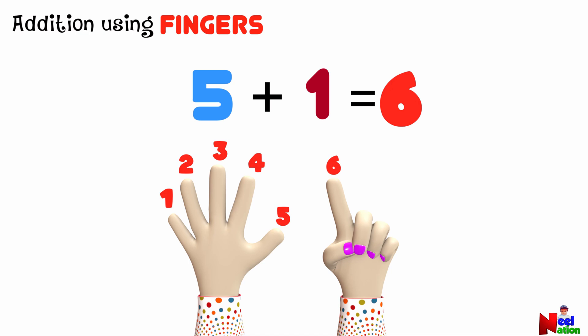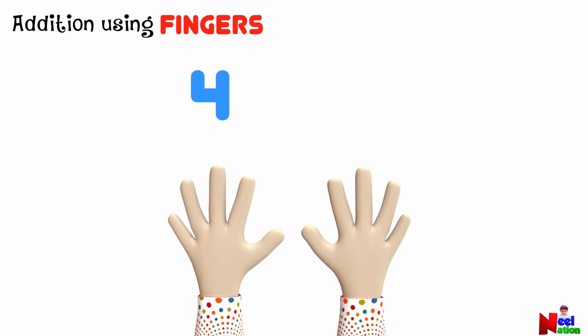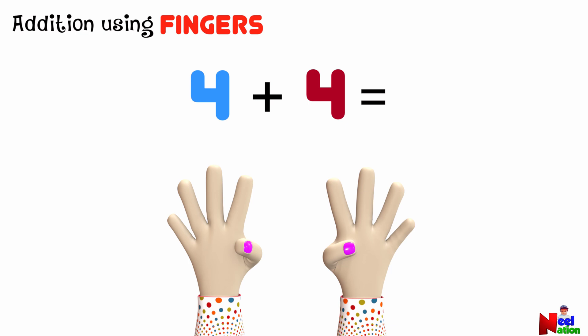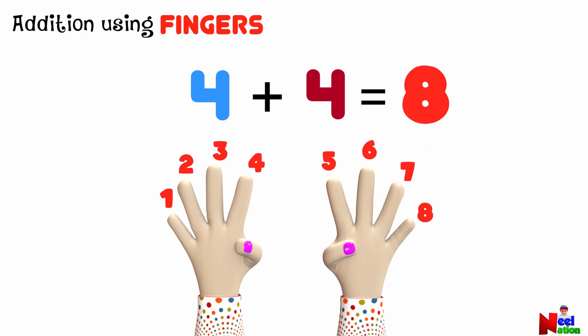See how easy it is to add using your fingers. Can you tell me what is four plus four? First, hold up four fingers. Now we need to add four more, so lift four more fingers. Let's count starting after four: five, six, seven and eight. That means four fingers plus four more equals eight.